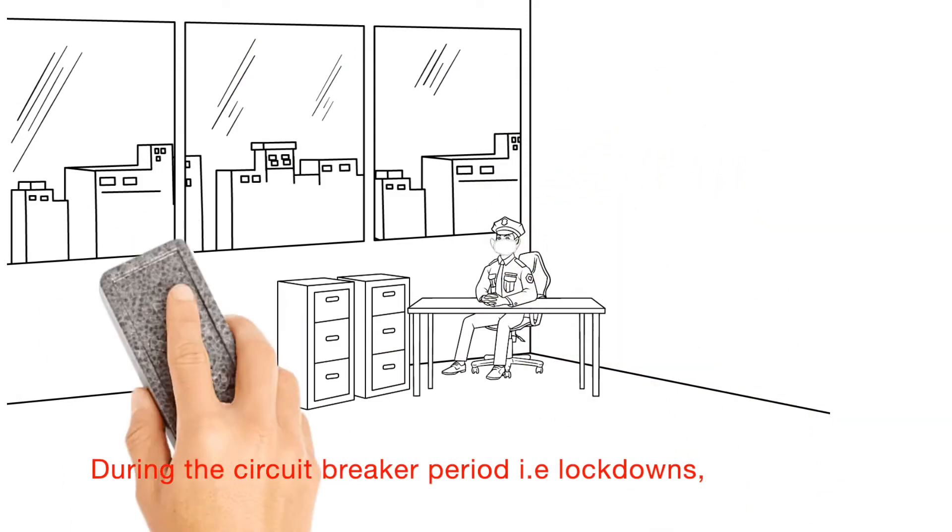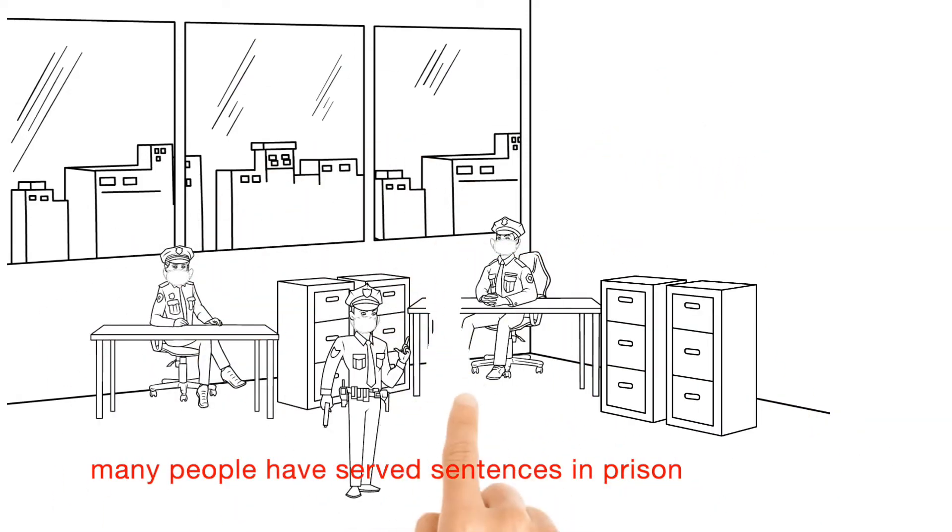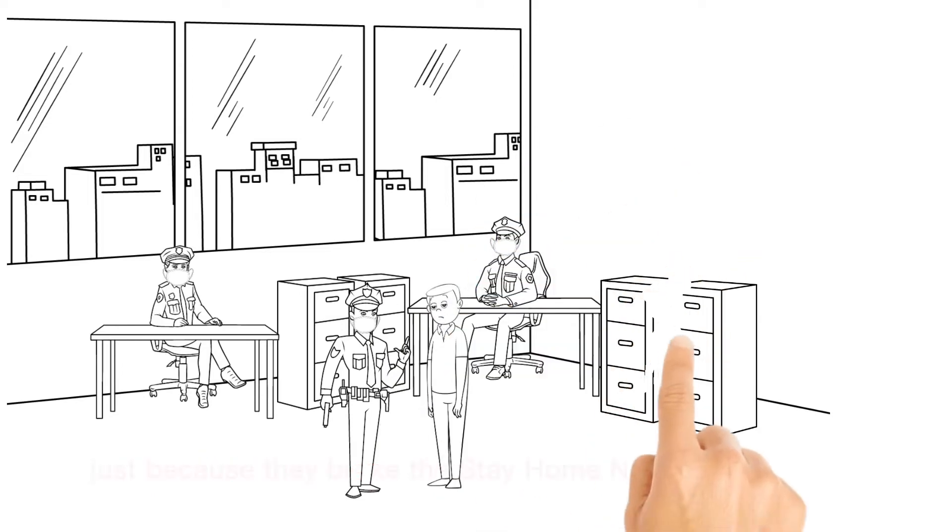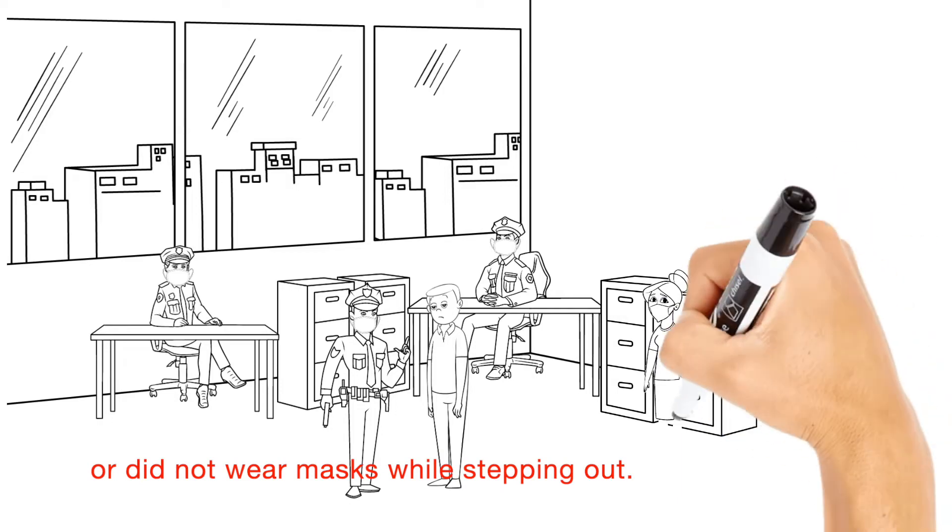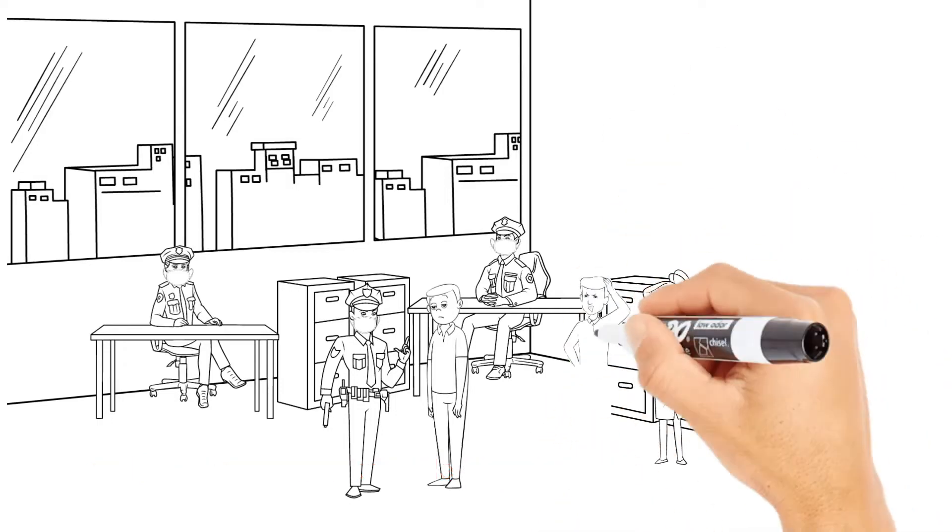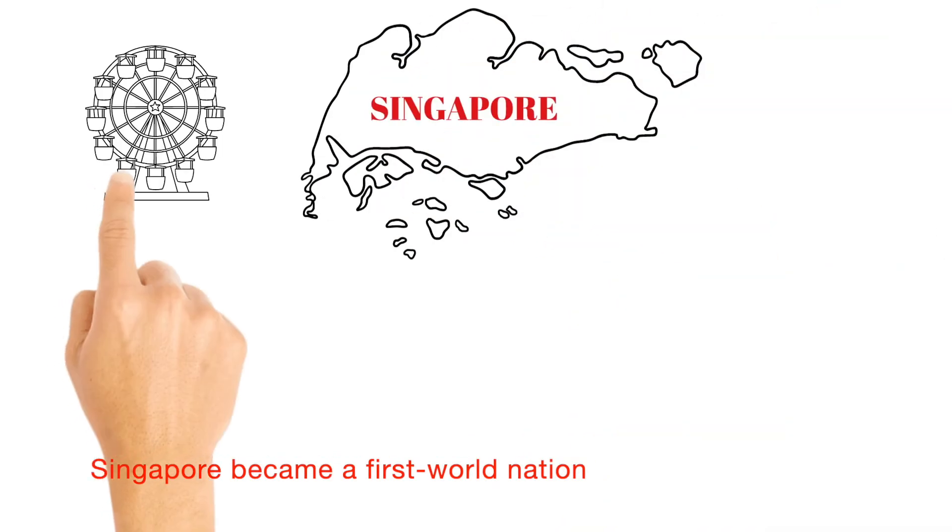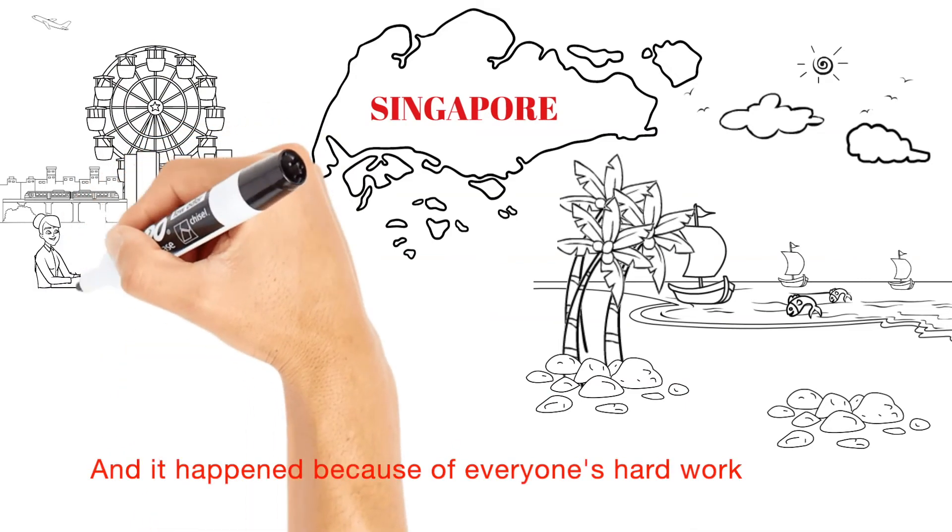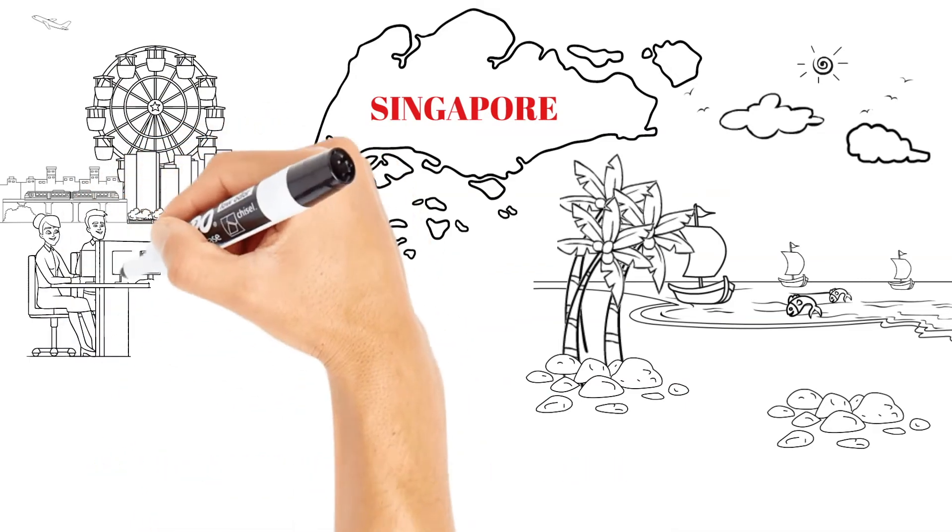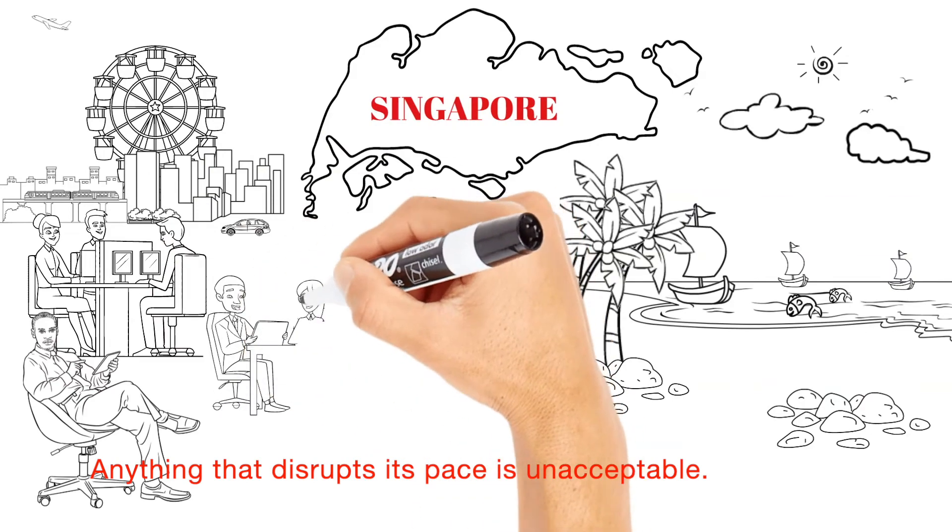During the circuit breaker period, that is lockdown, many people have served sentences in prison or were fined just because they broke the stay home notices or did not wear masks while stepping out. Singapore became a first world nation from a third world one in a short time and it happened because of everyone's hard work and disciplined life. Anything that disrupts its pace is unacceptable.